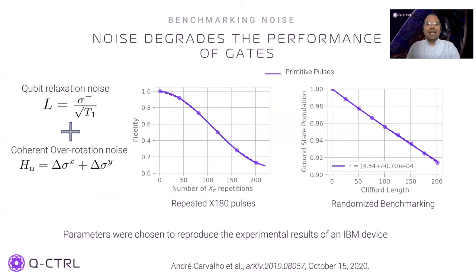So what exactly happens when we add noise to these cross-resonance simulations? Here, we consider a combination of two kinds of noises: a non-Hermitian qubit relaxation noise with time scale T1, and a Hermitian noise of constant strength — a coherent over-rotation noise. These noises show up as decaying single qubit gate performance in benchmarks. Notice that we do not subject the two qubit cross-resonance channels to any noise.